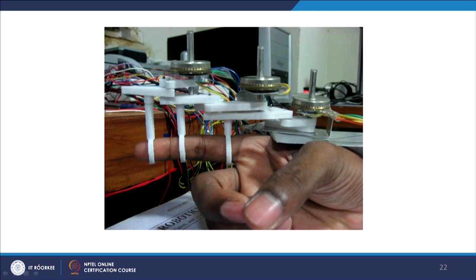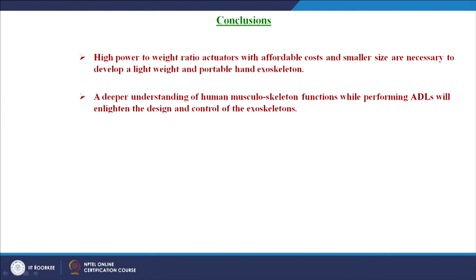With that, we have developed a 4-bar-based exoskeleton, which will be discussed in the next lecture — here shown as an index finger exoskeleton with 4-bar mechanisms connected serially from the base to the distal part of the finger. In conclusion: high power-to-weight ratio actuators with affordable cost and smaller size are necessary to develop lightweight and portable hand exoskeletons. A deeper understanding of human musculoskeletal functions during activities of daily living will enlighten the design and control of novel hand exoskeletons. Thank you.